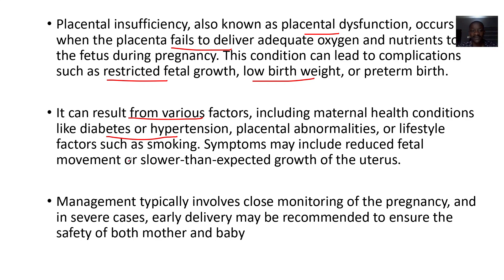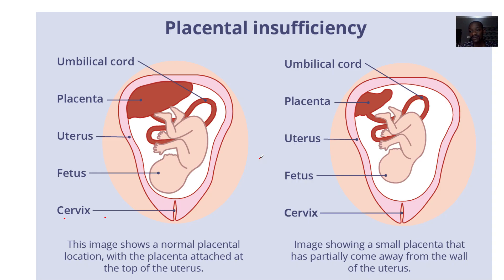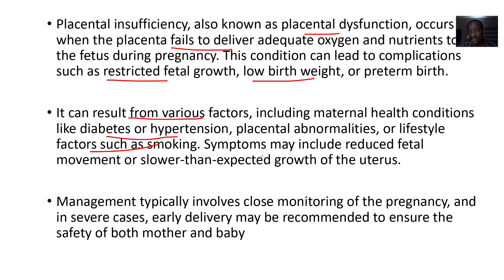Or maybe there are lifestyle factors like the mother used to smoke. Symptoms include the baby not moving fully. If you're not moving well with that part of the body, there's disuse — there's reduction in size — and slower than expected growth of the uterus.